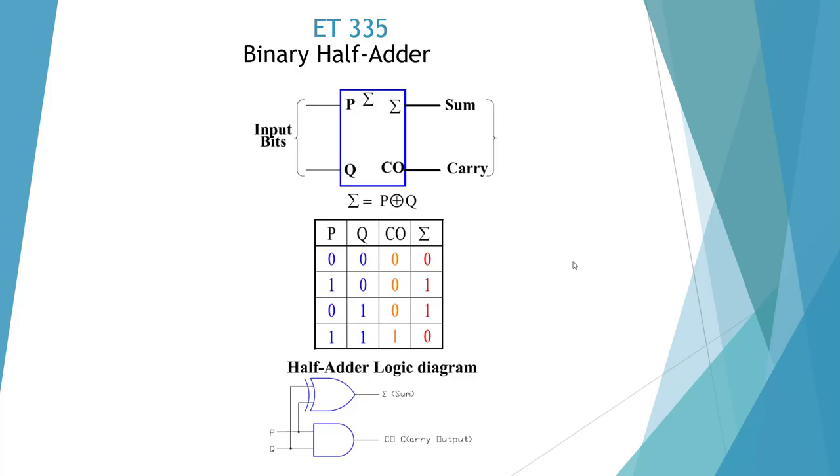Here I'm showing a binary half adder. This is the symbol for a binary half adder with two inputs, a summing output, and a carry output. Here's our truth table. When we add them up, we get 1, 0, or 1. When we add 1 plus 1, we get 0 carry the 1, so we get a sum of 0 and a carry of 1.